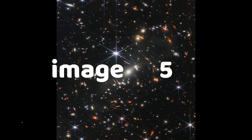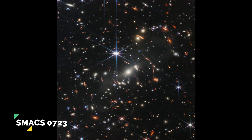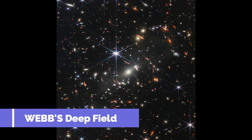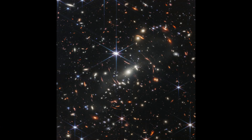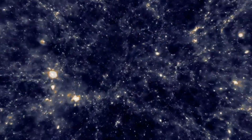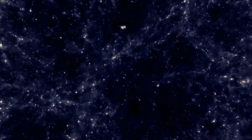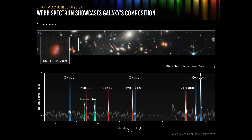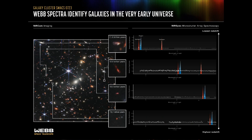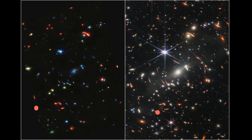Image number 5. This is the SMACS-0723 Galactic Cluster, also known as the Webb's Deep Field. Webb spied an extremely distant population of galaxies in this image. Galaxies in the foreground distort light and help magnify these faraway objects. The light from those galaxies has been traveling for billions of years, and the amazing fact is that you are looking at this galaxy cluster as it appeared some 4.6 billion years ago.